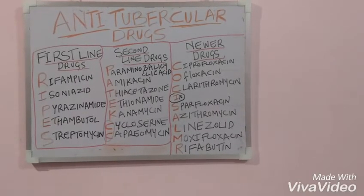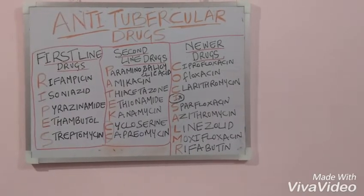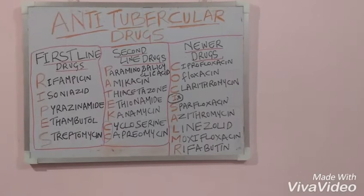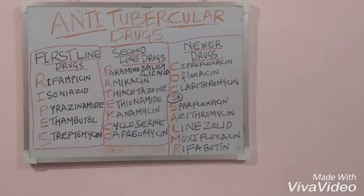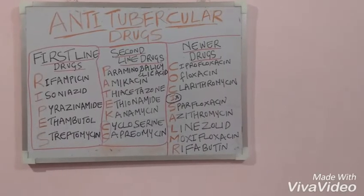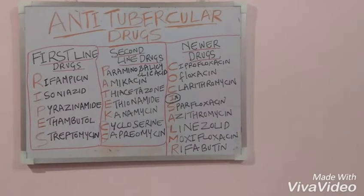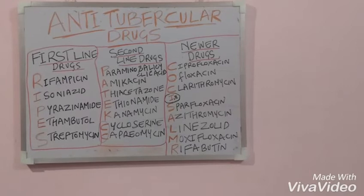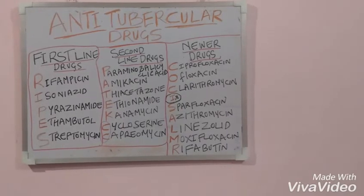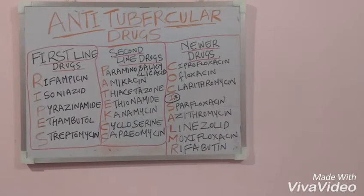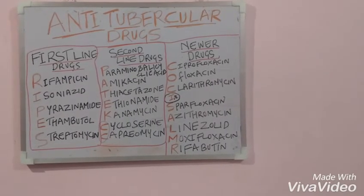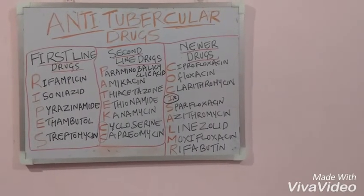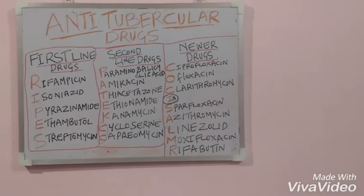Then we have the second line drugs: Para-aminosalicylic acid, Amikacin, Thiacetazone, Ethionamide, Kanamycin, Cycloserine, and Capreomycin.